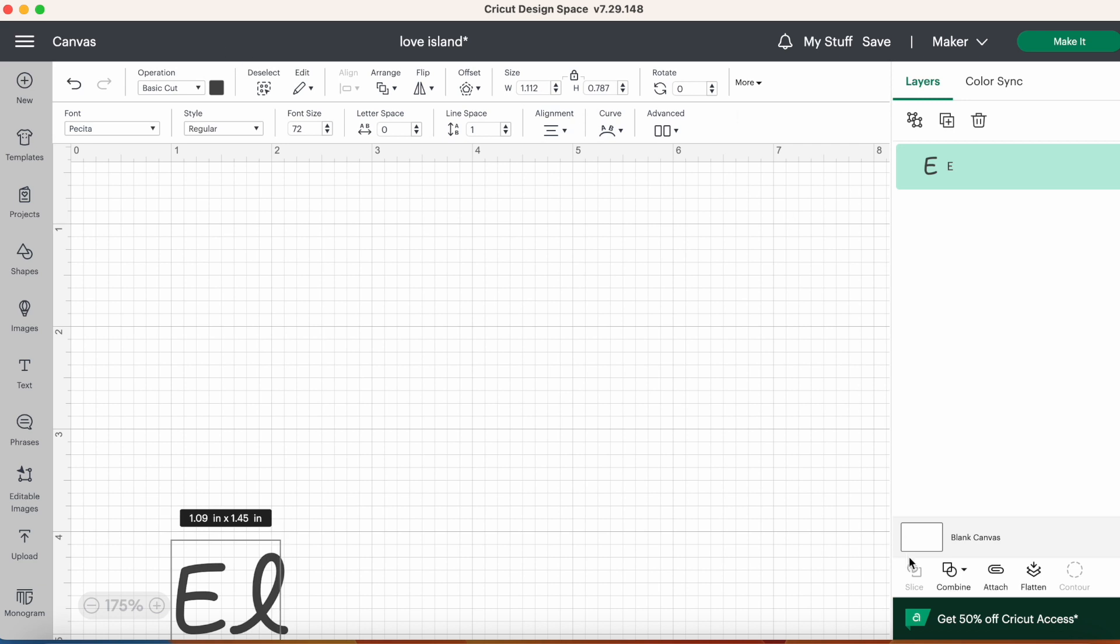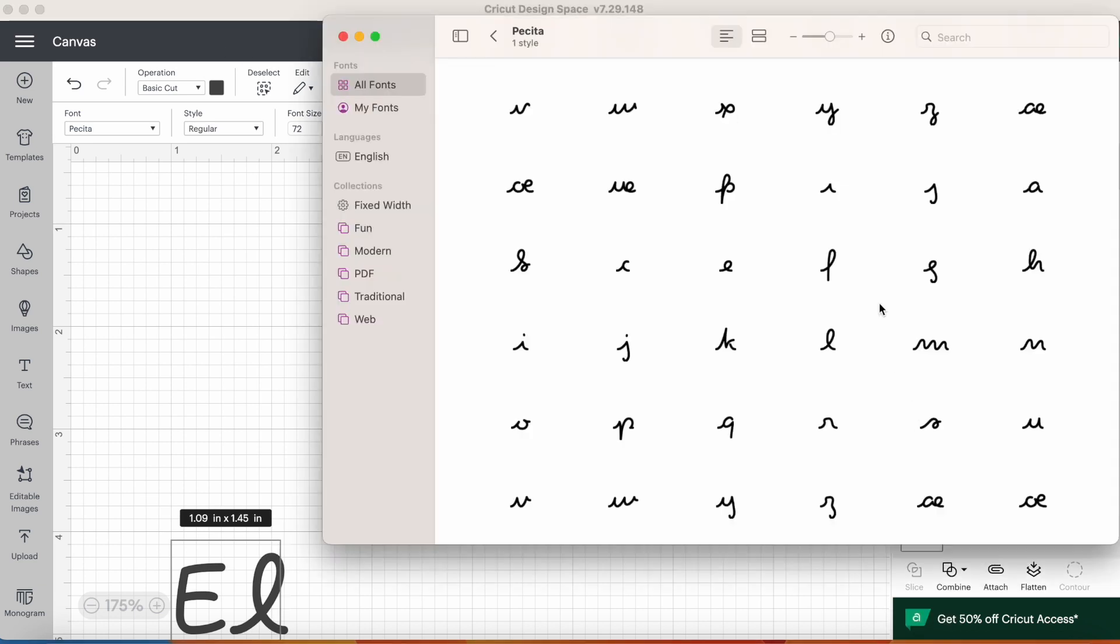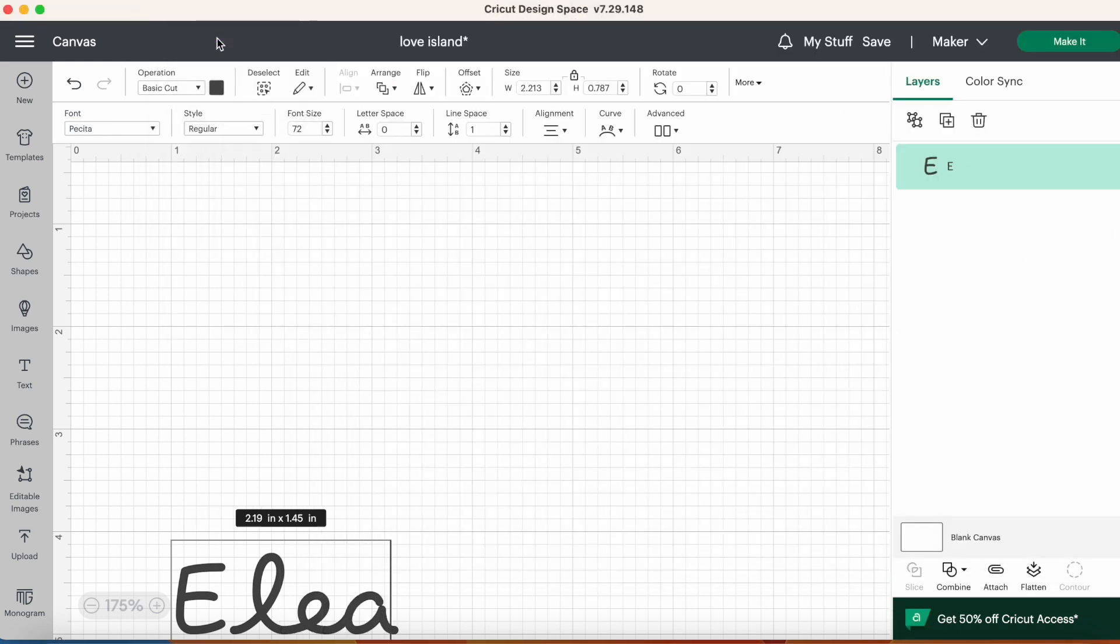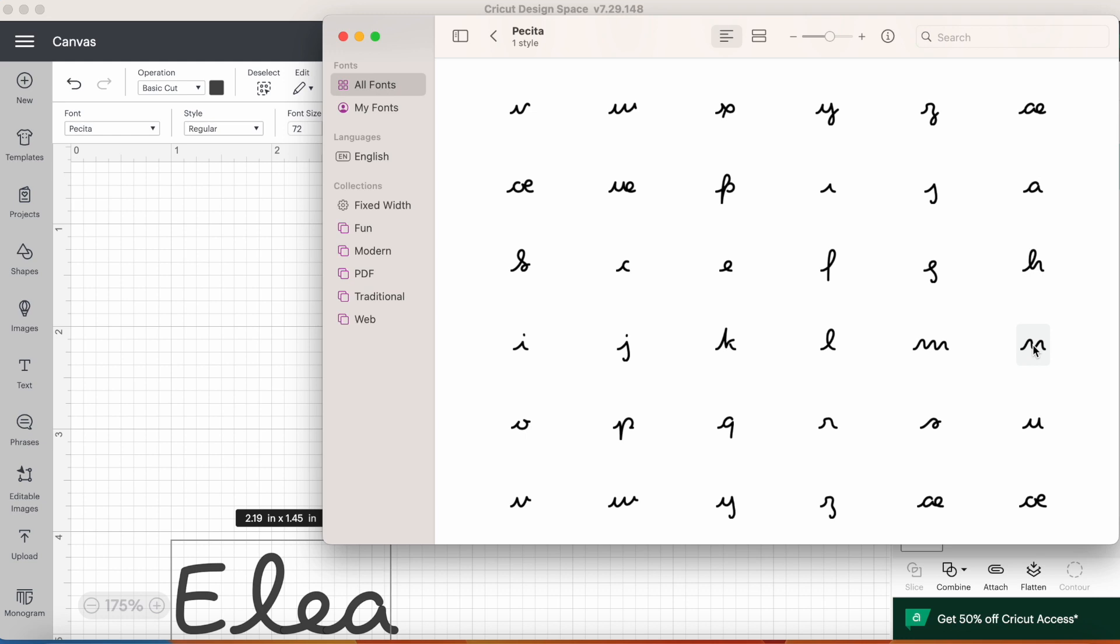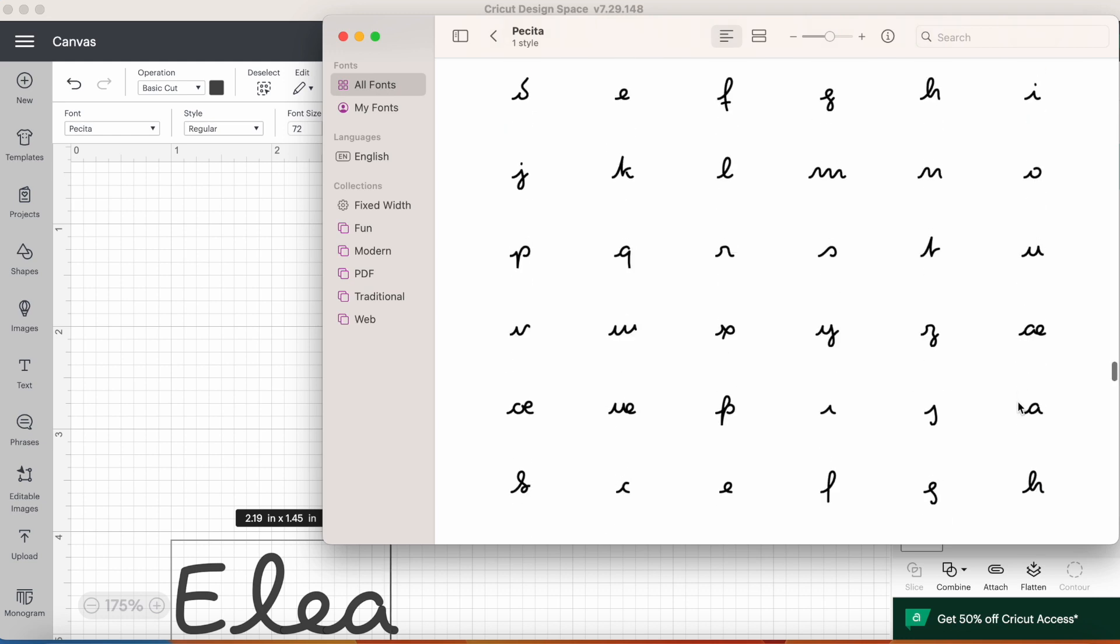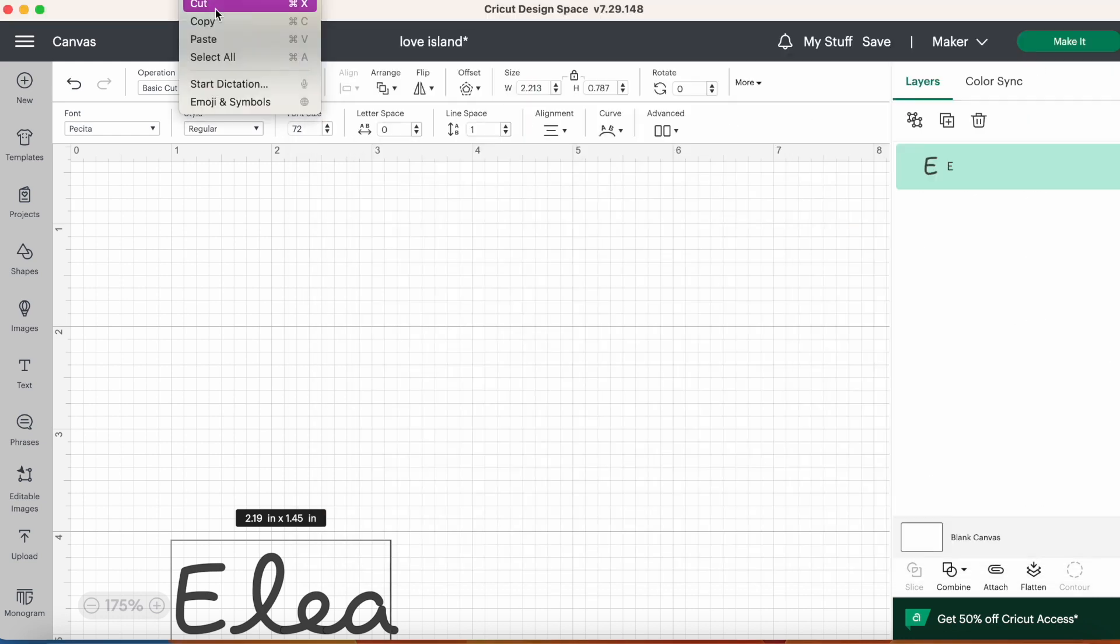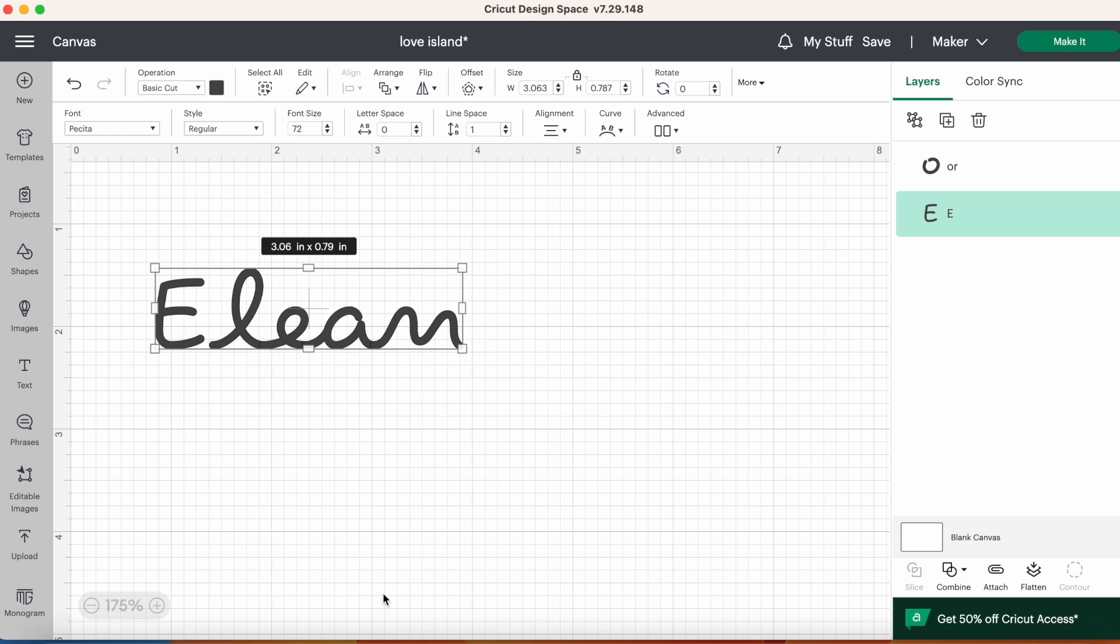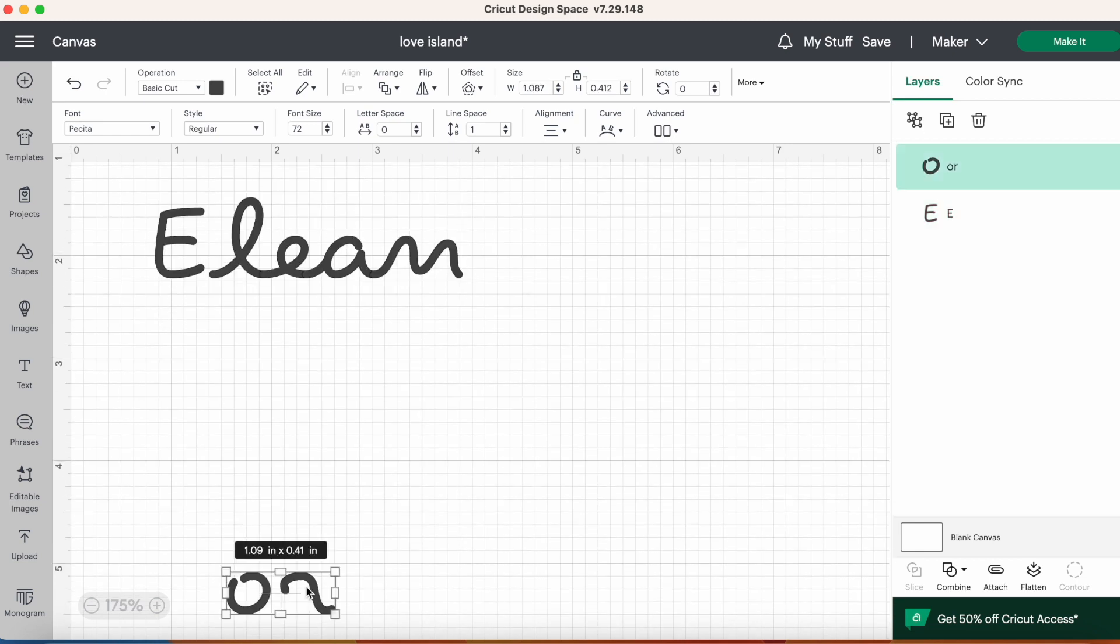It will let you know which are joined up cursive and which are not. I just copy and paste, so my L, my E, my A and my N are all joined up, and the O and the R are not, they're separate. I'm just going to use my keyboards just to type out the O and the R.